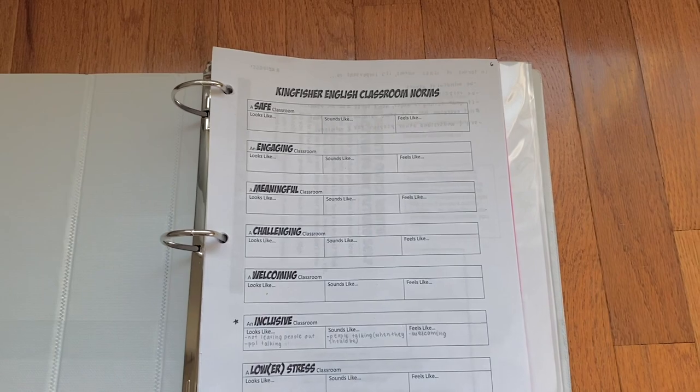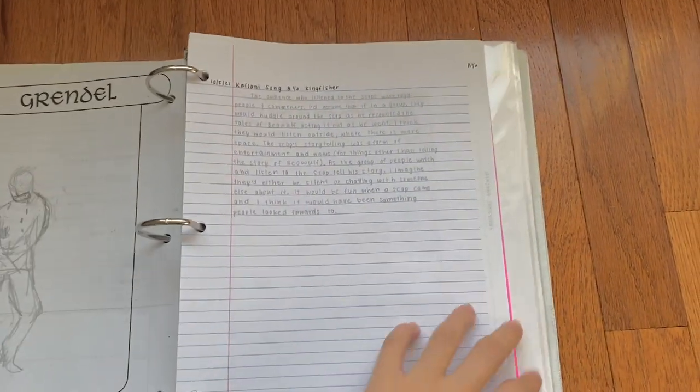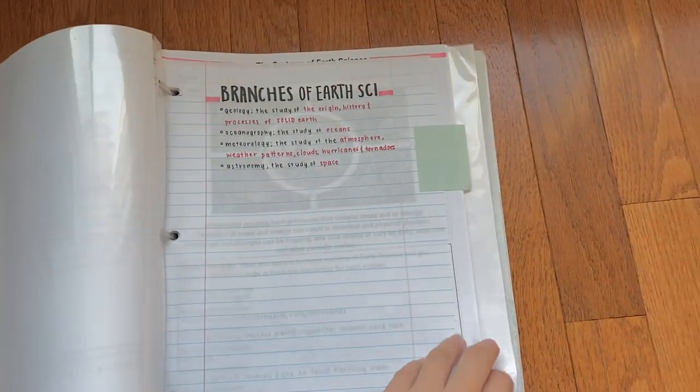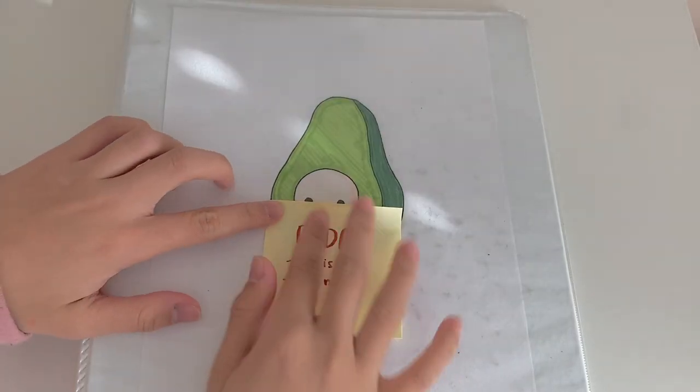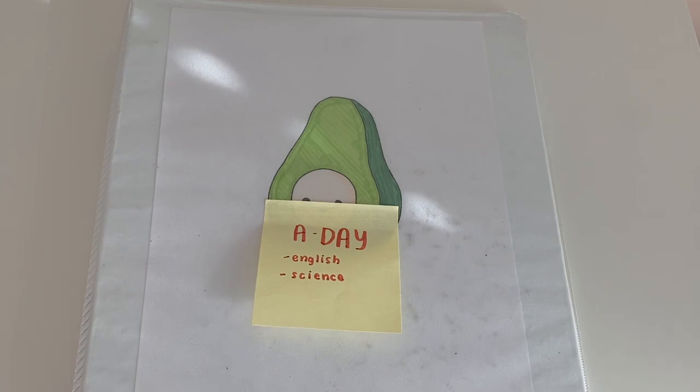The next way you can organize your binder is to divide it into classes or subjects. If you have different classes every day, you can divide it into the type of classes you have. For me, since I have different core classes each day, I organize my binder to only have the subjects for that day.